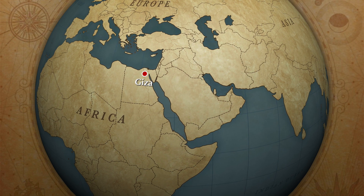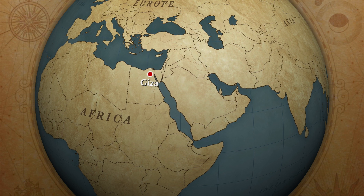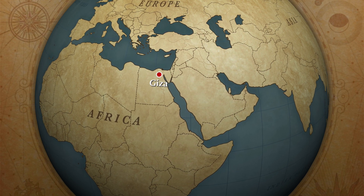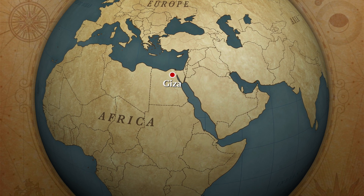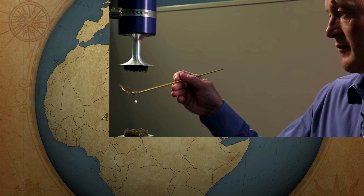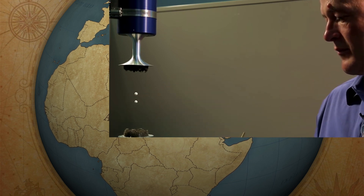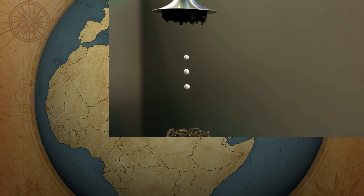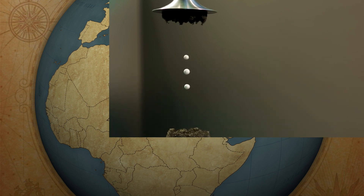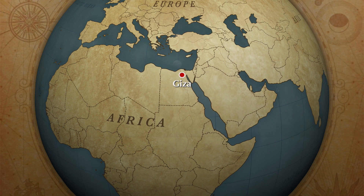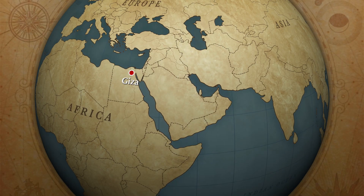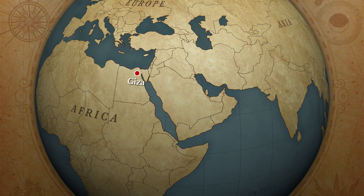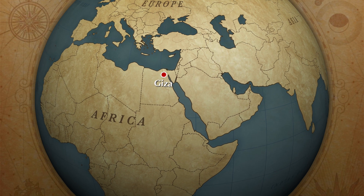Imagine the scene: the Egyptians have just quarried a massive stone, and they need to transport it to the construction site. But instead of using brute force and dragging it along the ground, they use speakers to create pressure waves that lift the stone off the ground and suspend it in mid-air. Then they use more speakers to guide the stone to its destination, carefully adjusting the frequency and intensity of the sound waves to control its movement. It's like a giant game of Sonic Tetris. And once the stone is in place, they simply turn off the speakers and the stone gently sets down in its final location.